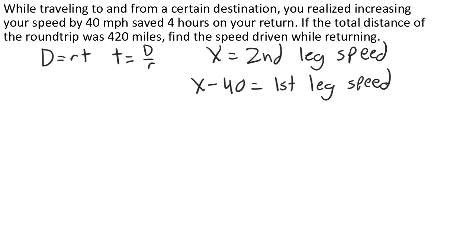And now it's time to talk about time. We're given a comparison between the times of the two trips. We're told that we saved four hours on the return, so the second leg was supposed to be four hours faster than the first leg. We can make an equation out of that. The time for the second leg should be the time for the first leg minus four hours because we saved four hours.